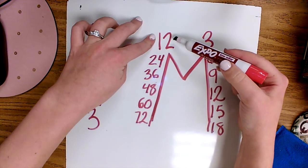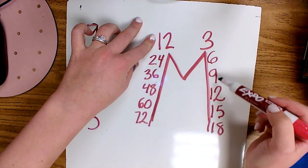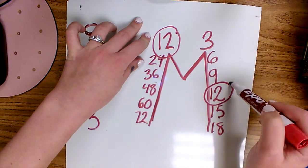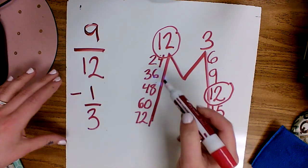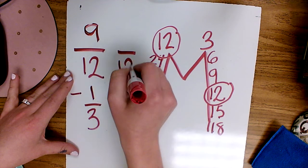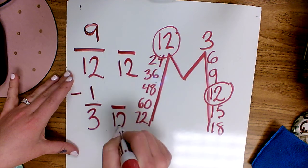So I can start on one side and look for twelve over here. Oh, and I got lucky, it's the first number I checked. Twelve is my least common multiple, which means that they can both have a denominator of twelve. So I make my new denominator.